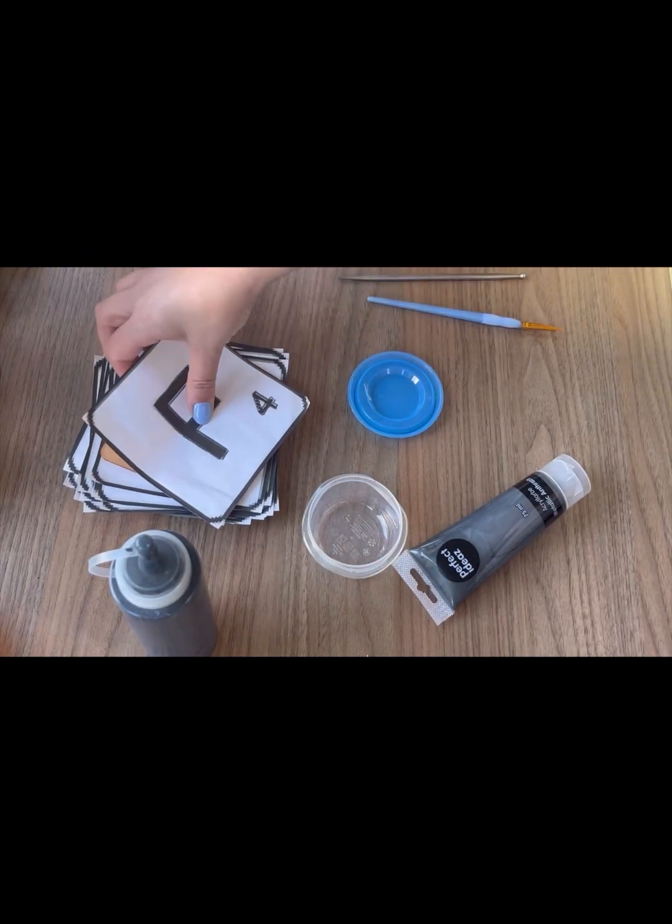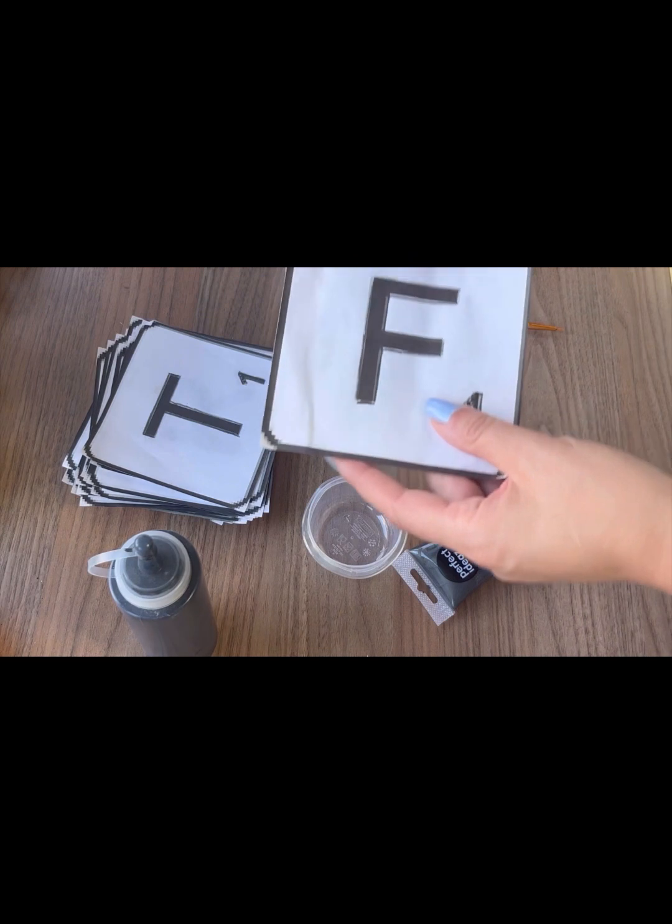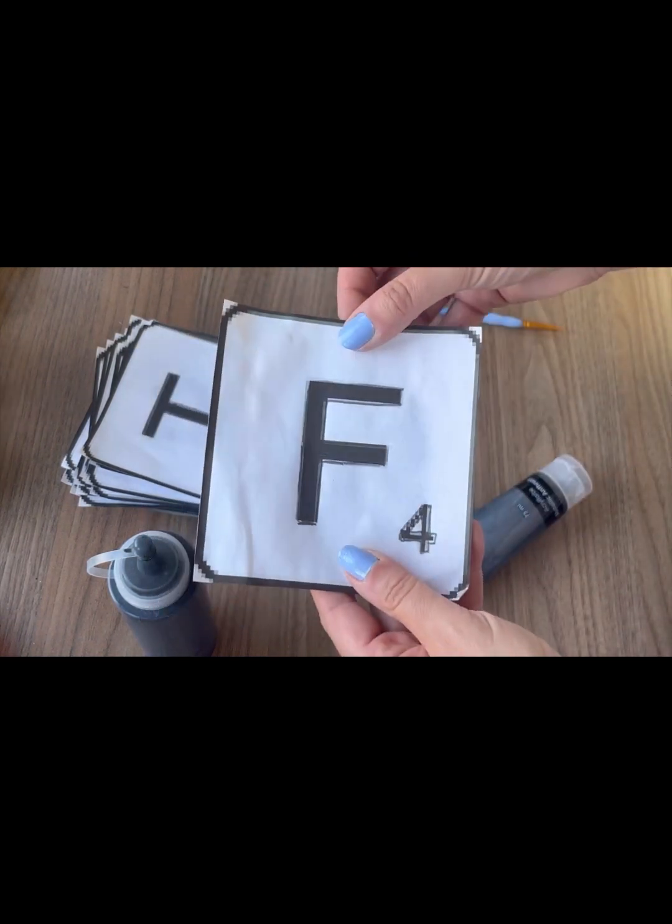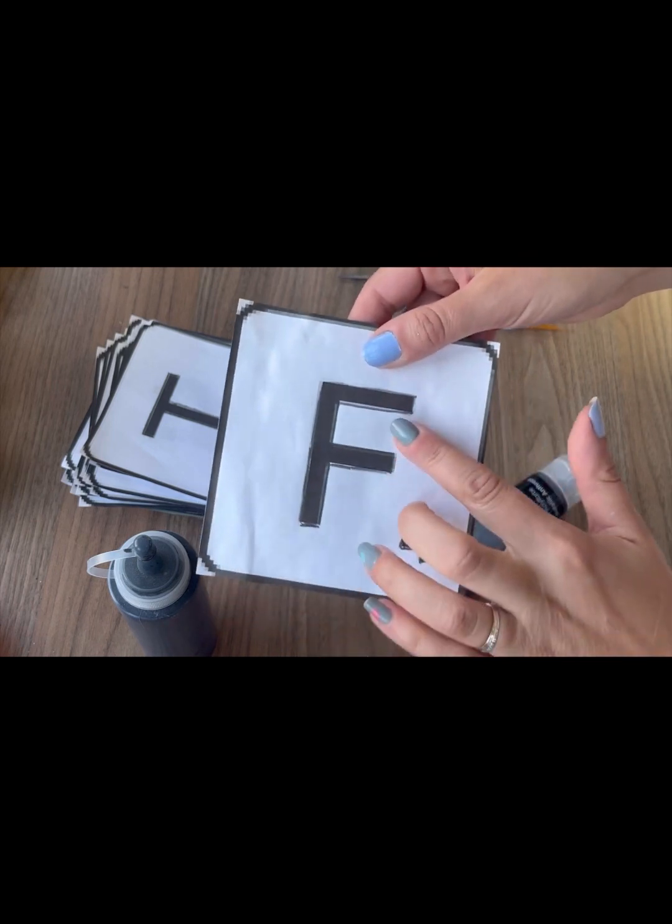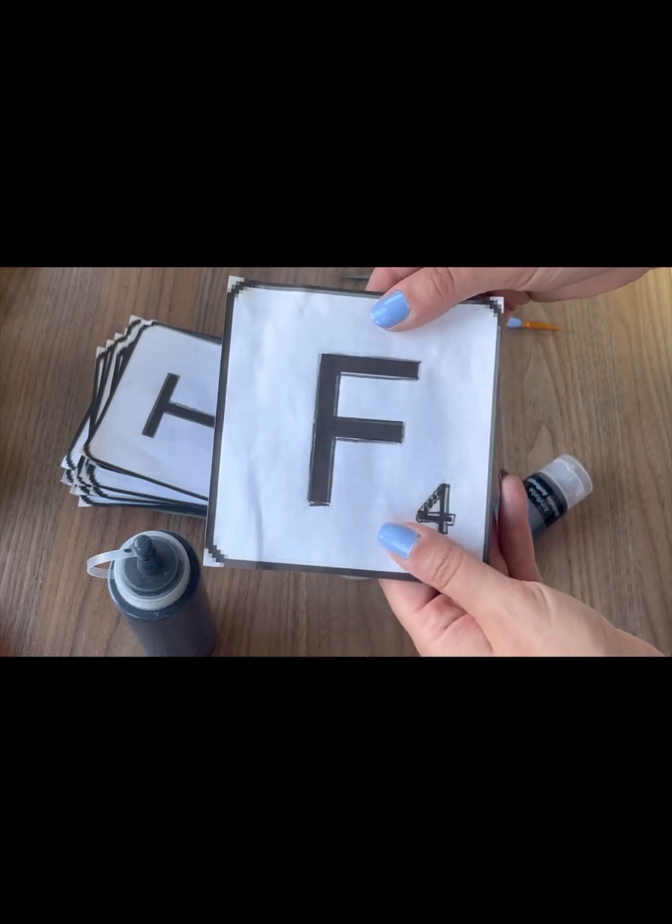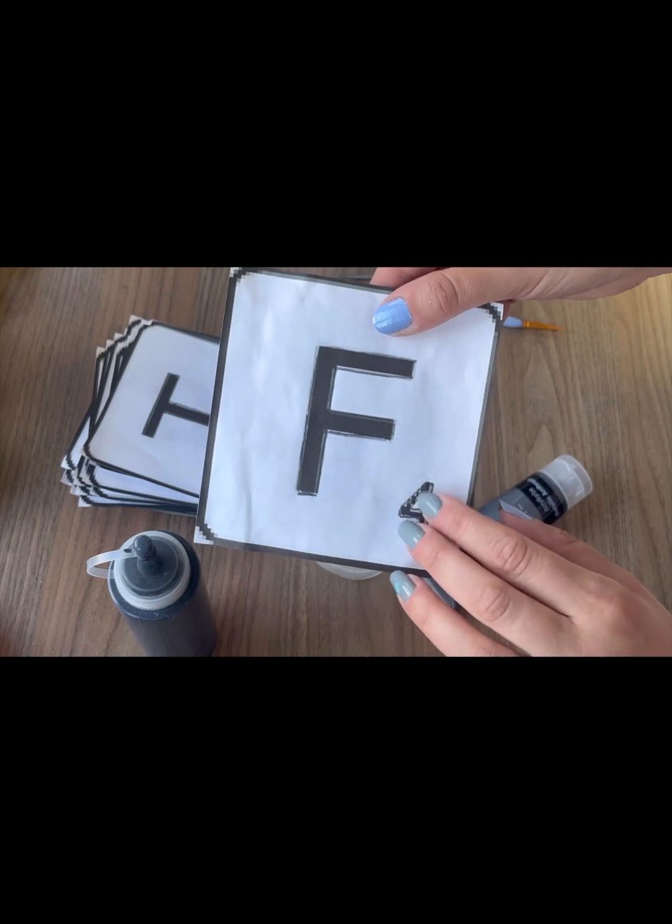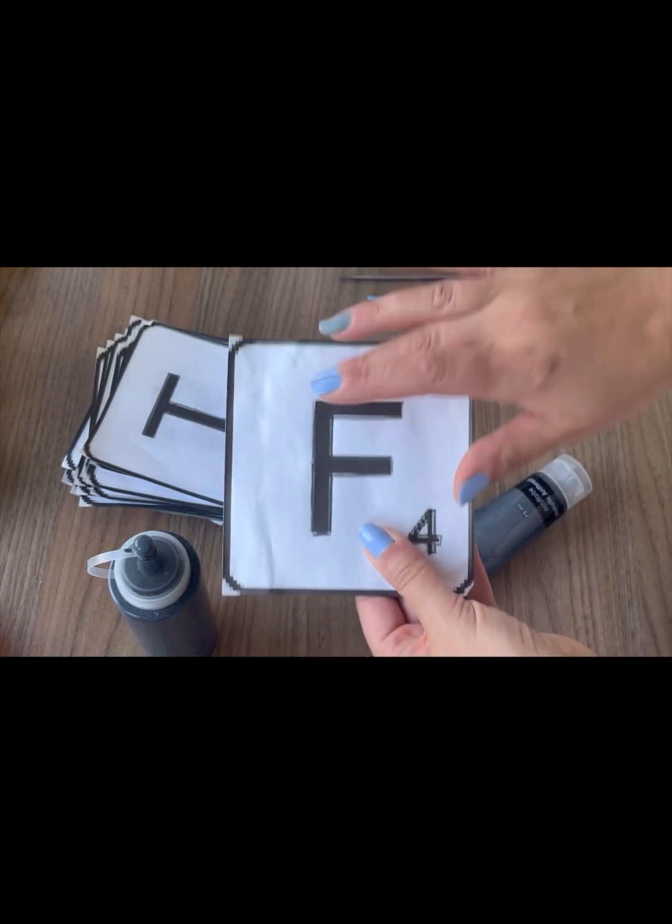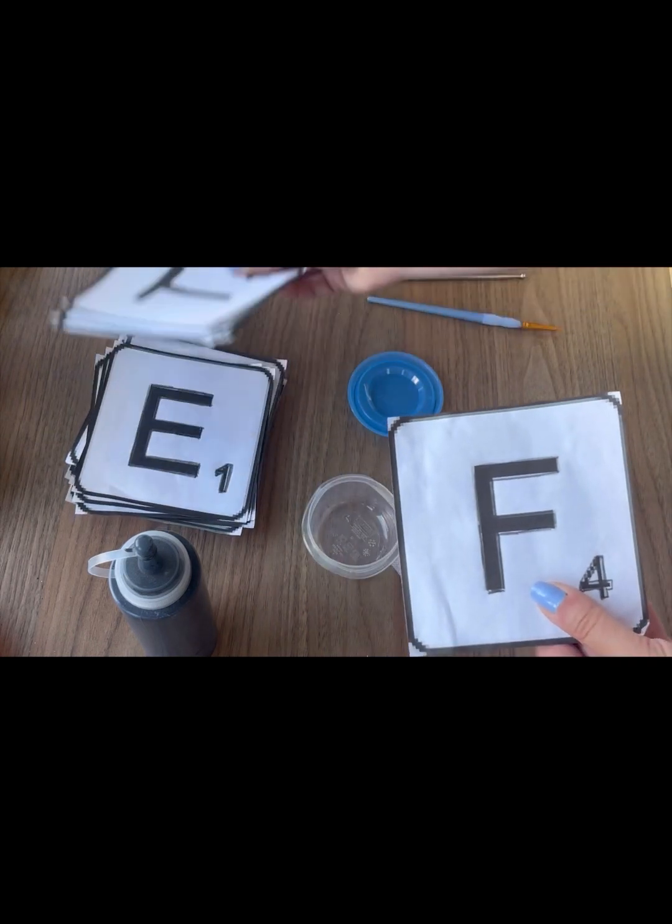What I've done is I have made up on the computer these squares of letters using the standard font. Just pick your font from Word or whatever your word processing software is, and I've added the numbers to match the letters that I need for my Scrabble tiles. I've done a load of these, as you can see they're all down here.